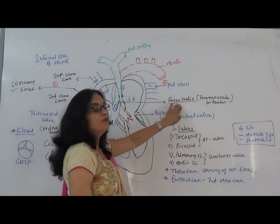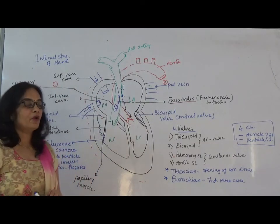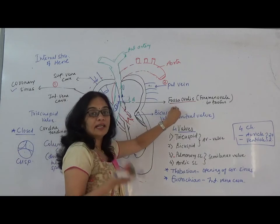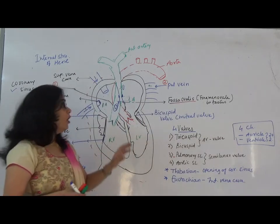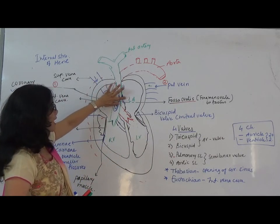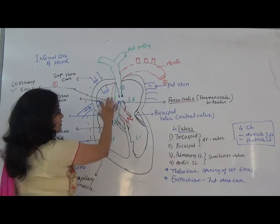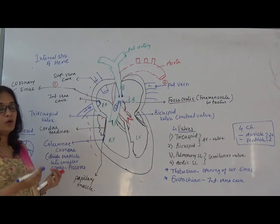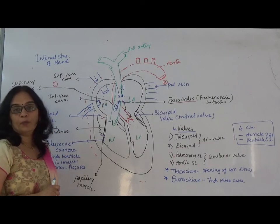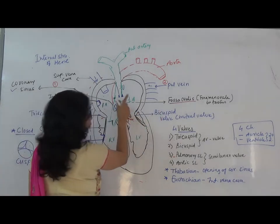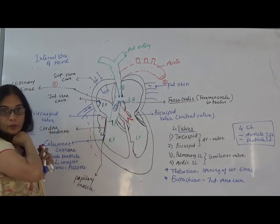To clarify: foramen ovale is the opening present between the right and left auricle during fetal life. Immediately after birth it closes, and the remaining depression is called the fossa ovalis. In some babies, this opening does not close and remains as it is. This is linked to blue baby syndrome, where oxygenated and deoxygenated blood mix because the foramen ovale fails to close properly.